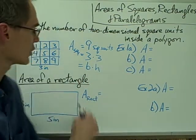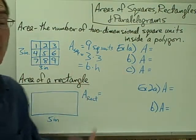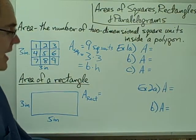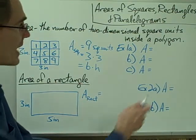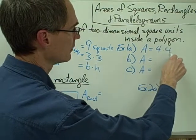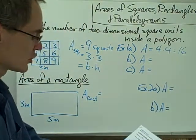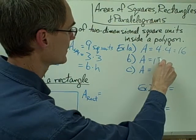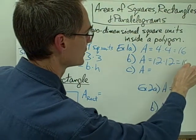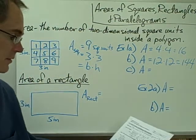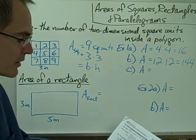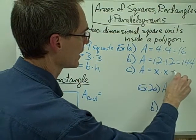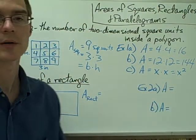In a square, the base and the height are both the same, so we could say the side squared if we wanted to. In example 1A, given a square with the following sides, find the area. Example 1A: we have a square that's four by four, so the area would just be four times four, which is sixteen square units. In 1B, we have a square with a side that is twelve, so twelve times twelve is one hundred and forty-four square units. And in 1C, we have a square where we don't have a number for the length of the side, just a variable, so the area of the square is x squared square units.